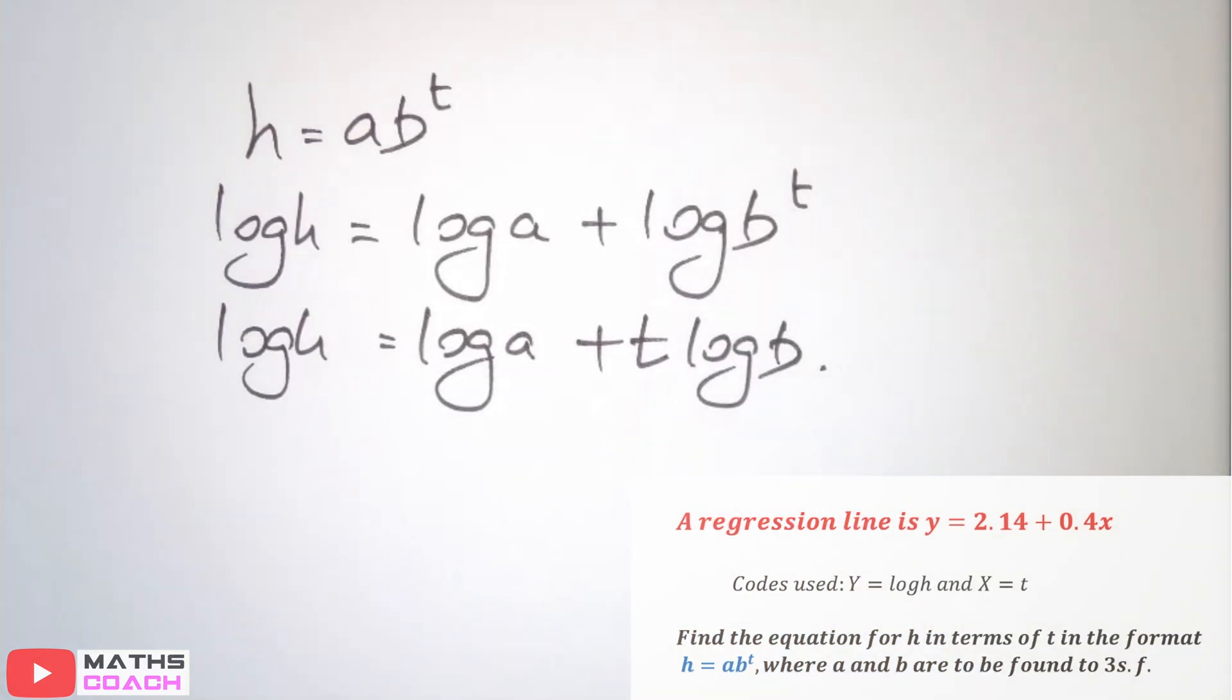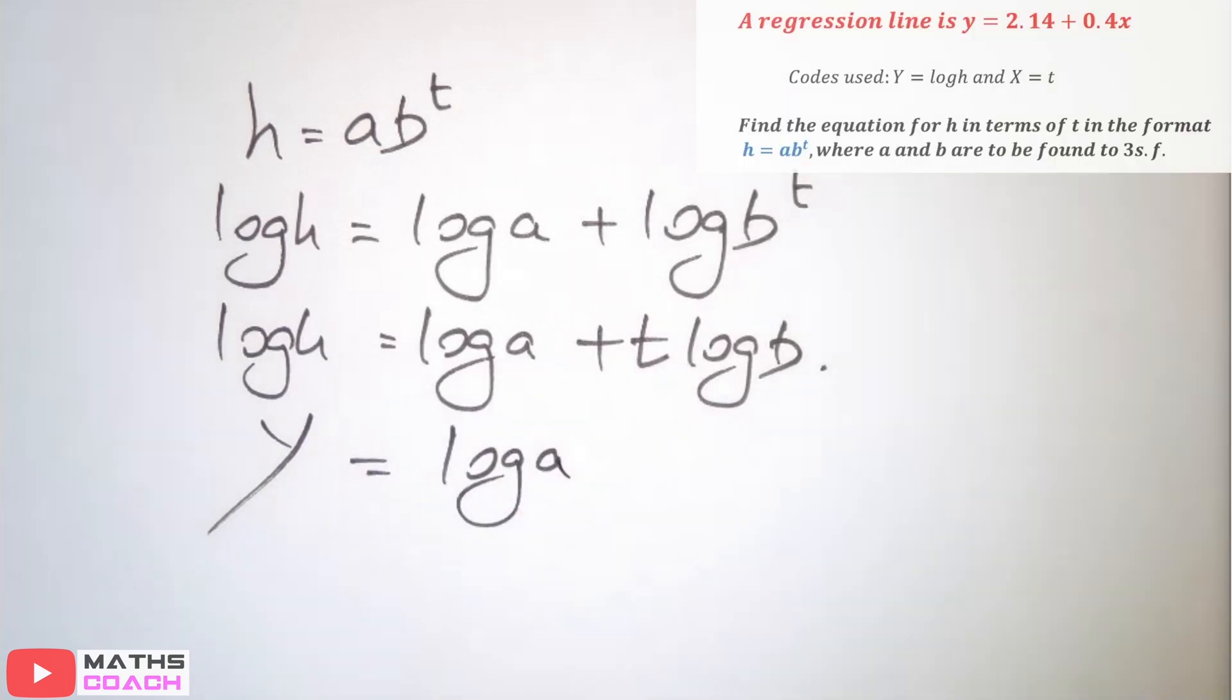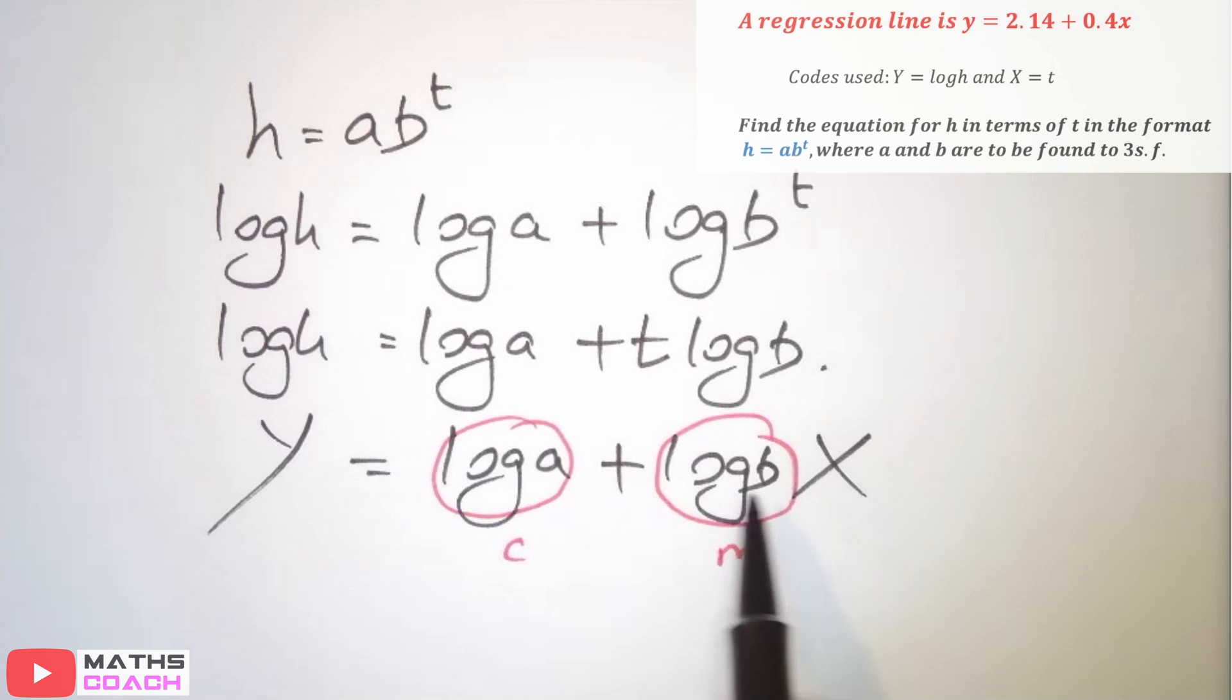We're now going to compare that with the codes that you see. We notice that log h is y. Log a is my constant. Log b is going to be dropping down, and t happens to be x. So, we have log b x. If we compare that with y equals mx plus c, this log a would be my c, and this would be my m.